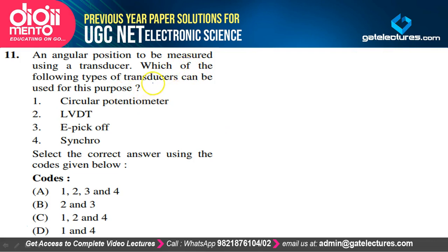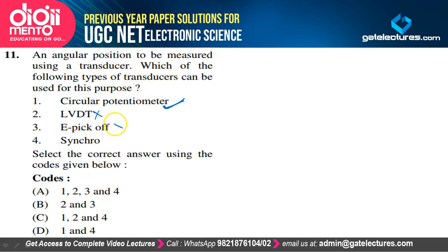To measure angular position using a transducer: a circular potentiometer can be used for determining angular position. LVDT cannot be used, E-pickoff cannot be used, but a synchro can be used. Option D satisfies the explanation and is the correct option.